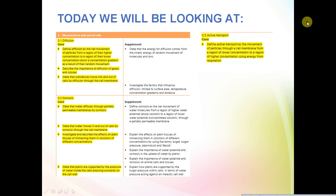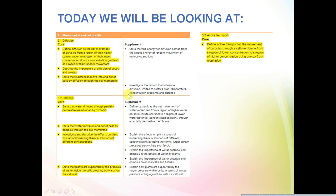Welcome to another episode of IGCSE Biology. Today we're going to be looking at section 3 of the syllabus, Movement In and Out of Cells. In this video, we're only going to be covering the core aspects of the syllabus, where in the next video we'll be covering the supplementals. What this section really wants you to be able to do is know and explain the three main types of transport: diffusion, osmosis, and active transport, and their roles in the movement of particles in and out of cells.